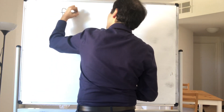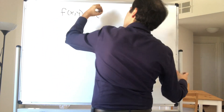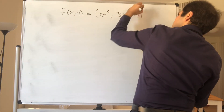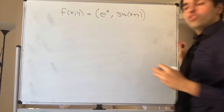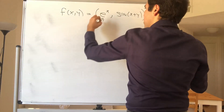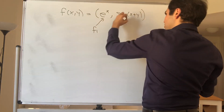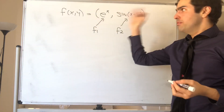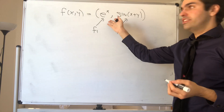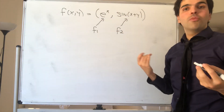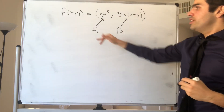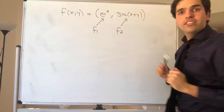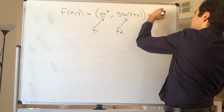Consider the function f of (x, y) being (e to the x, sine of x plus y). So it's a function with two components, f1 and f2, and I want to show that this function is continuous if and only if each component is continuous. Here f1 itself is continuous and f2 is continuous, so in fact the whole function is continuous.